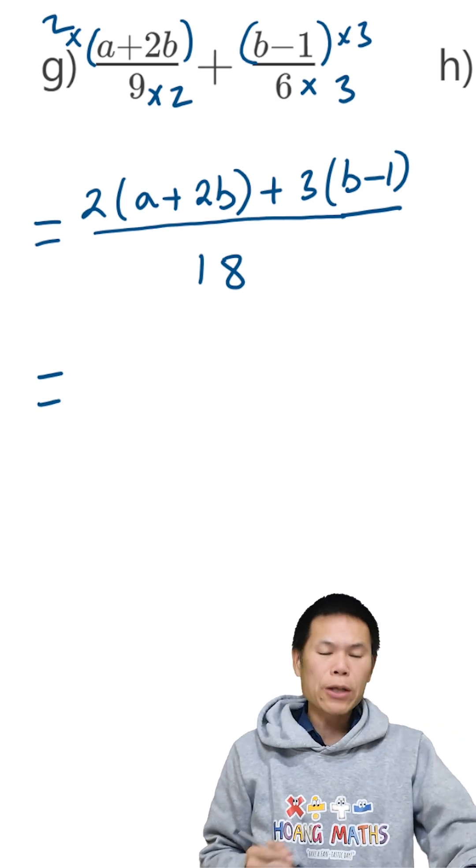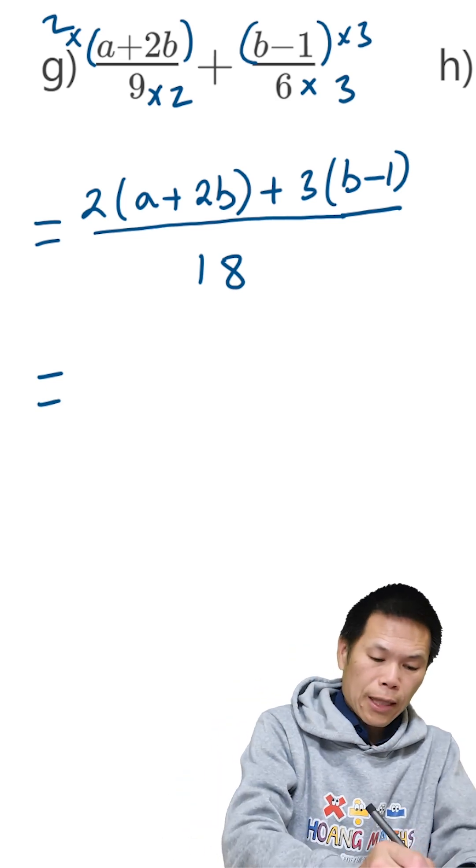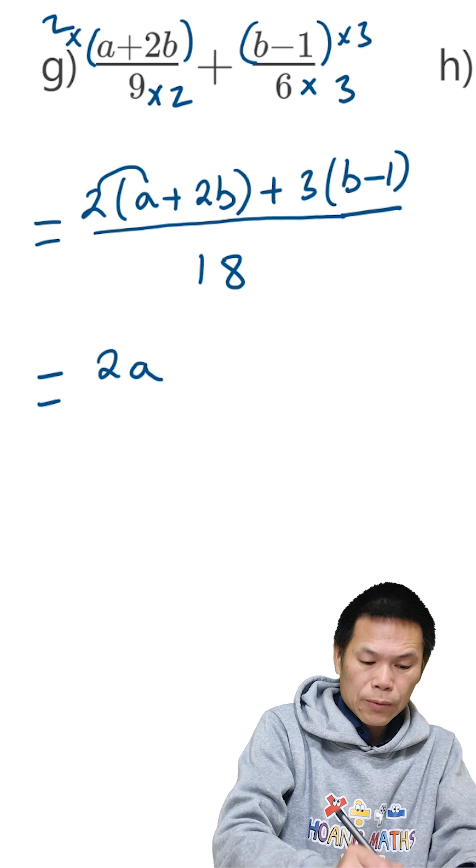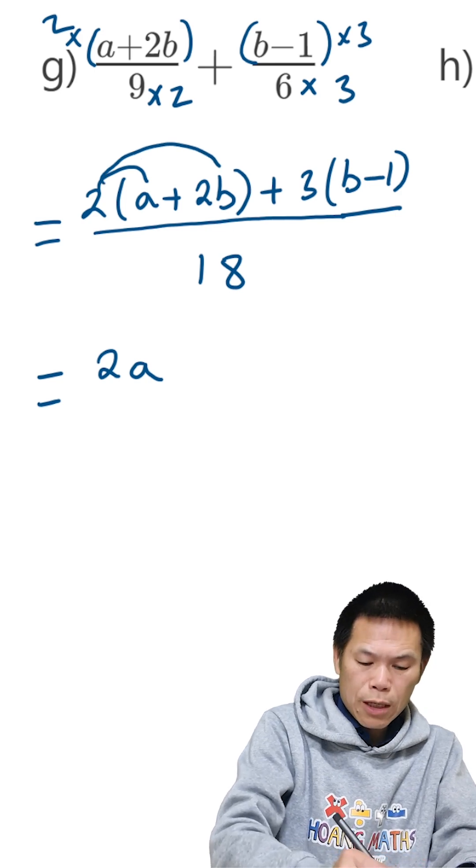Now I just remove the brackets, times this, give me 2a. 2 times 2b, give me 4b.